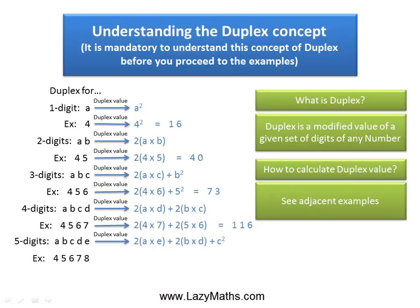As an example, if we have 45678 as the number, the duplex value for that is given as 2 times 4 times 8, plus 2 times 5 times 7, plus the middle digit 6 squared, and we get 170 as the duplex value for 45678.